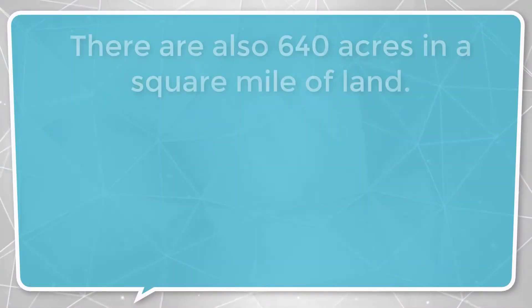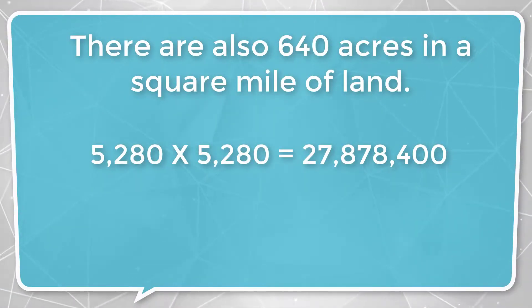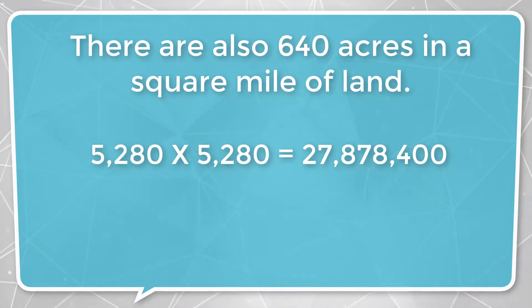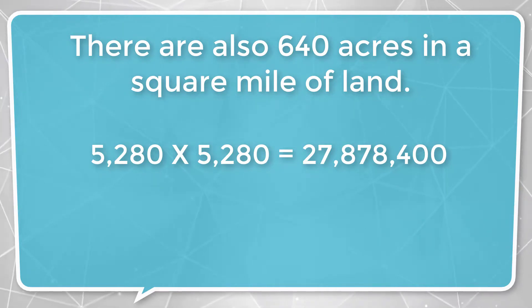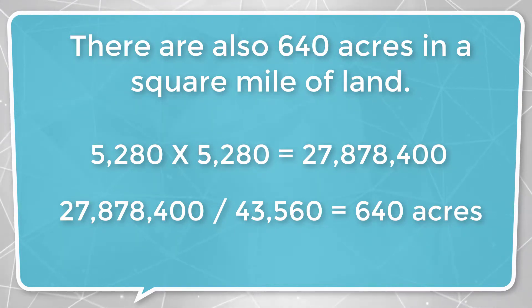Another thing mentioned here: there are also 640 acres in a square mile of land. A square mile is a perfect square — but how many feet are in a mile? You just learned how many square feet are in an acre, and now you need to know how many feet are in a mile: 5,280. So if we've got a square piece of land, we take 5,280 times 5,280, and we come up with 27,878,400 square feet in that piece of land. If we take that and divide it by how many square feet are in an acre — 43,560 — we get 640 acres. So a 640-acre piece of property that is square is exactly one square mile, with all boundaries — northern, southern, eastern, western — each measuring one mile, or 5,280 feet.